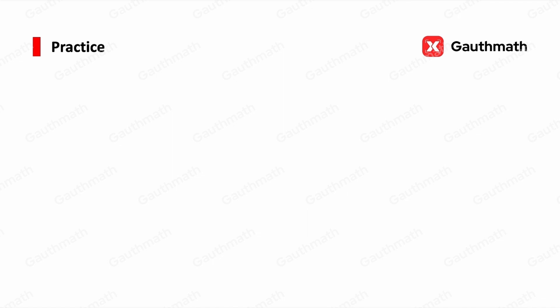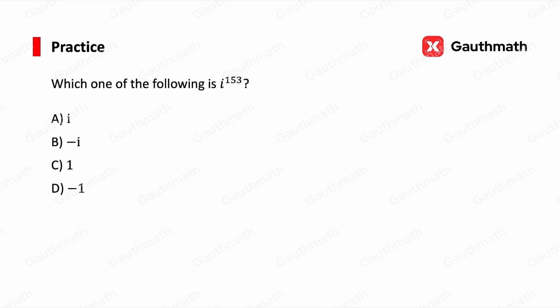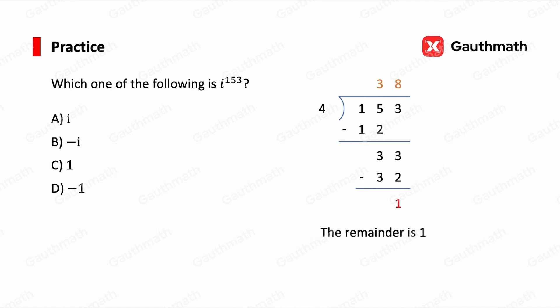Let's do one practice: which of the following is i to the power of 153? The first step is to divide 153 by 4, and we can see the remainder is 1. So i to the power of 153 equals i to the power of 1, which is i. The correct answer is i.